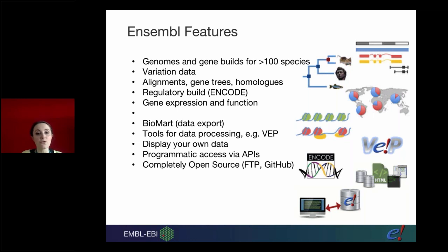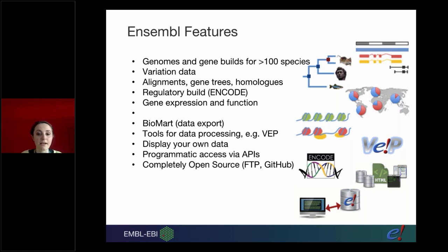We have different ways to get hold of that data. We have a tool called BioMart for data export, and tools for data processing. Some of you might have heard of our Variant Effect Predictor, and we'll be looking at another of our tools today - the linkage disequilibrium tool. We allow you to display your own data. We have a Perl API and a REST API for programmatic access, and we are completely open source with an FTP site - our data and code is all on GitHub, free to download and use.